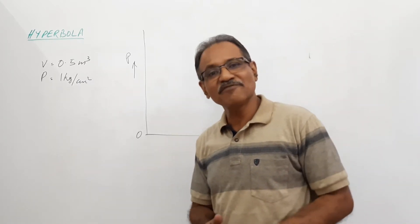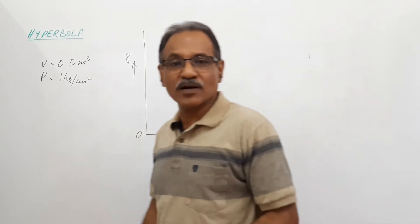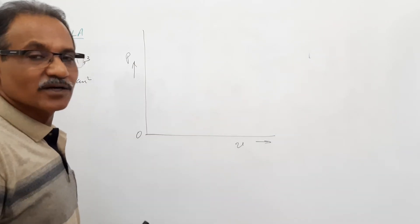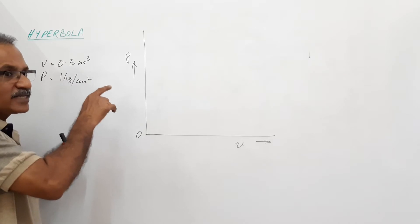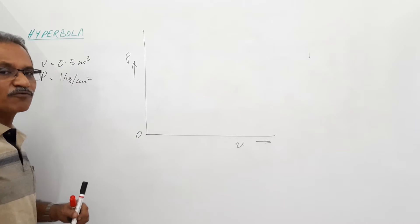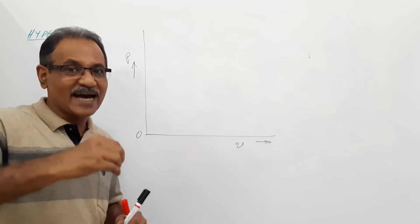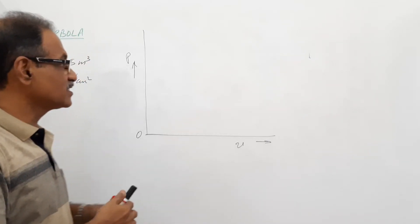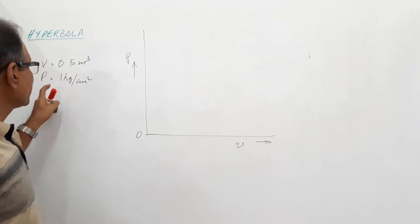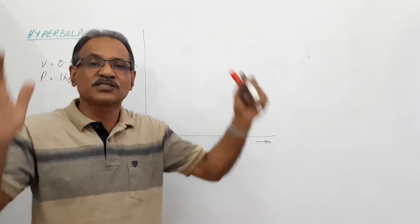Hi students, welcome to Engineering Graphics. I'm Dr. Vinod Kumar. You have a practical problem here in hyperbola — you are given to draw a Boyle's law curve. A point is given: the state of the gas is volume equal to 0.5 meter cube, corresponding to pressure of 1 kilogram per centimeter square. You are asked to draw the curve when the gas is compressed.